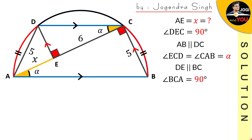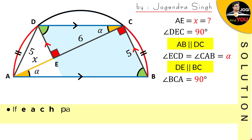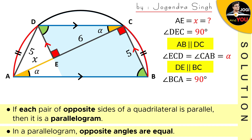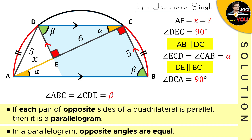Now let's look carefully at points B and D — what is the relation between these green-colored angles? To understand their relation, look carefully at this blue-colored figure and observe these two pairs of parallel lines: AB parallel DC and DE parallel BC. We have two pairs of opposite sides that are parallel. The property related to parallel lines says: if each pair of opposite sides of a quadrilateral is parallel, then it is a parallelogram, and if it is a parallelogram, then opposite angles are definitely equal. So our green angles are equal to each other, and we write: angle ABC equals angle CDE, and we name them beta.